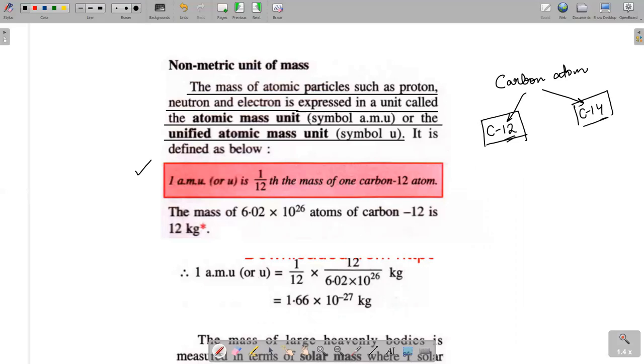Har ek atom me, jantay ho na, har ek atom ka center me proton or neutron hoota hai, jishe hum nucleus bholta hai. And is nucleus ke 4o taraf kya ghoomta hai? Electrons ghoomta hai. This central part of the atom is known as nucleus. Samaj raha ho? Aur yeh baar jho ghoomta hai nucleus ke 4o taraf jho revolve kertai hai, unhye hum bholta hai electrons. Toh nucleus me kya hoota hai? Protons hoota hai, neutrons hoota hai. The total number of protons and neutrons, yarni p plus n, doonho ko add kar dya, toh hume milta hai mass number. Toh jis carbon atom ka mass number twelve hoota hai, vayasay carbon atom ko, hum bholta hai carbon-12.